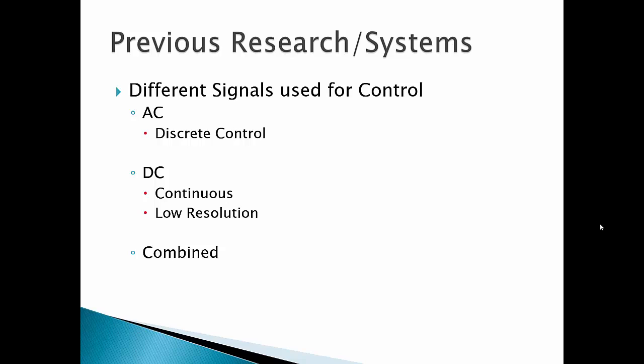Previous research has shown different methods for signal control. There are AC control, DC control, and combined. AC control is a discrete control. It detects the AC parts of the eye movement. DC control behaves better in continuity. It has continuous control, but it has low resolution. The combined control combines both AC and DC to produce a better performance.